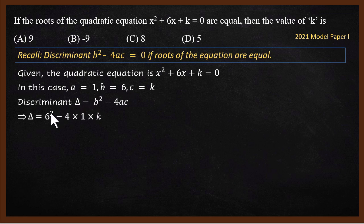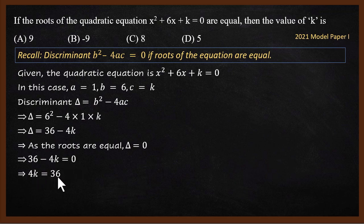So what is b² - 4ac then? b² - 4ac will be 6² - 4 × 1 × k. A is 1, c is k. So simplify, 6² is 36, 4 × 1 × k is 4k. So 36 - 4k. Since the roots are equal, the discriminant is 0. So 36 - 4k = 0, which means 4k = 36, which means k = 36 ÷ 4, which is 9. So answer is 9, option A.